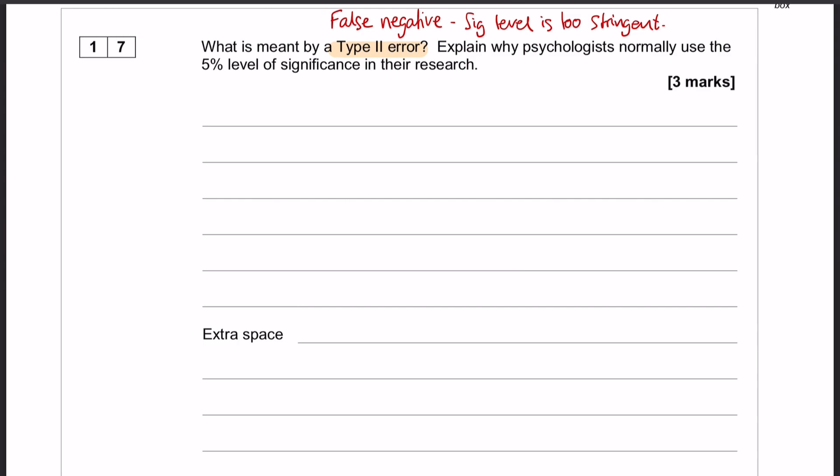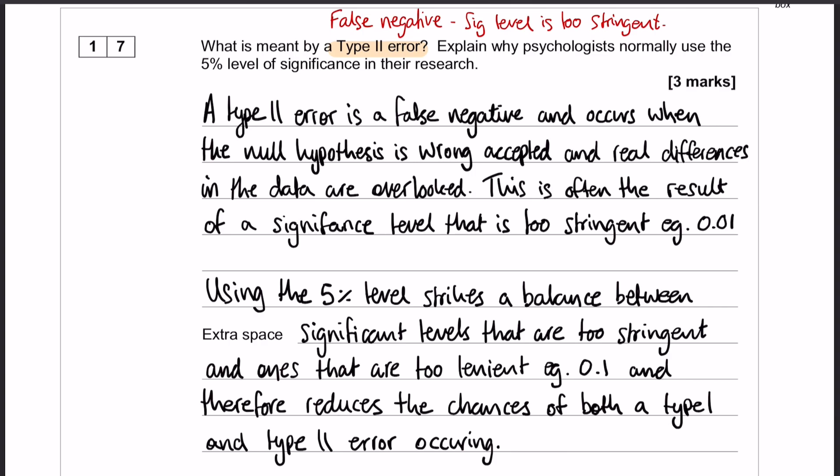Let's have a look at how to put this into words. A Type 2 error is a false negative and it occurs when the null hypothesis is wrongly accepted, and therefore we are overlooking real differences in the data. The reason that occurs is because the significance level is too stringent, for example 0.01 or 1%.